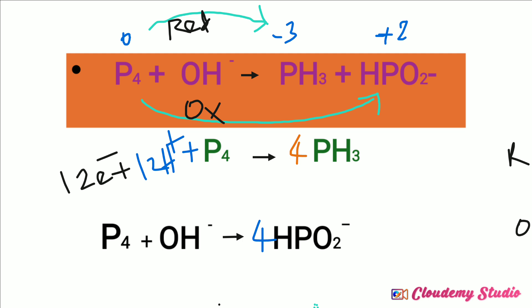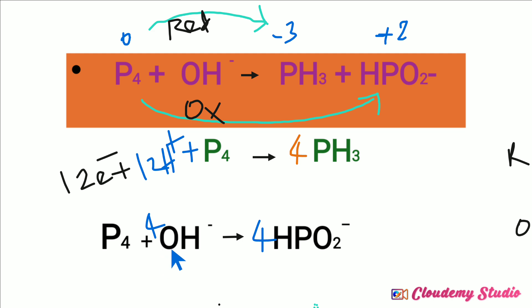Hydroxide is multiplied by 4, giving 4OH on the left-hand side. Now the left-hand side has 4 oxygen atoms, but the right-hand side has 4 times 2 = 8 oxygen atoms. So 4 more oxygen atoms are required on the left. To balance the oxygen atoms, we add 4 molecules of water on the left-hand side — 4 H₂O.